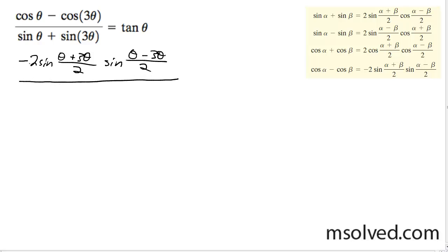And then for the denominator, we're going to go ahead and come down here and we're going to get sine alpha. So we're going to use the first equation there. We're going to get 2 sine alpha plus beta times cosine of alpha minus beta.